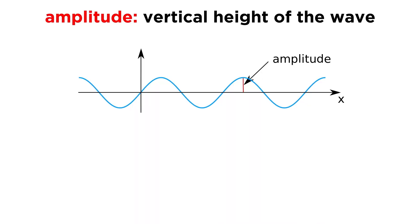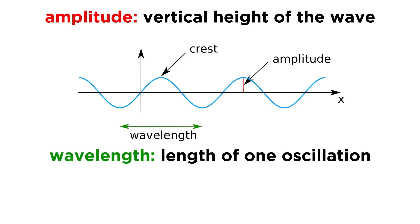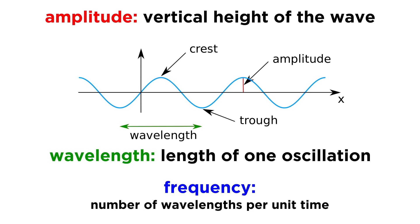Any wave will have an amplitude, which is this vertical distance. It will have a wavelength, or the lateral distance from crest to crest, or trough to trough. It will also have a frequency, or the number of wavelengths that pass by a particular spot per unit time.